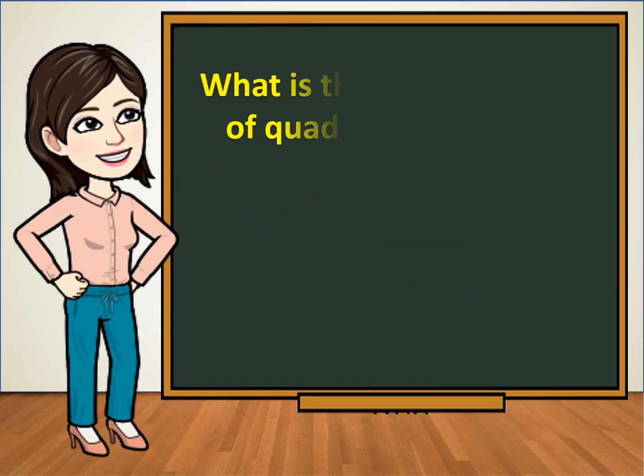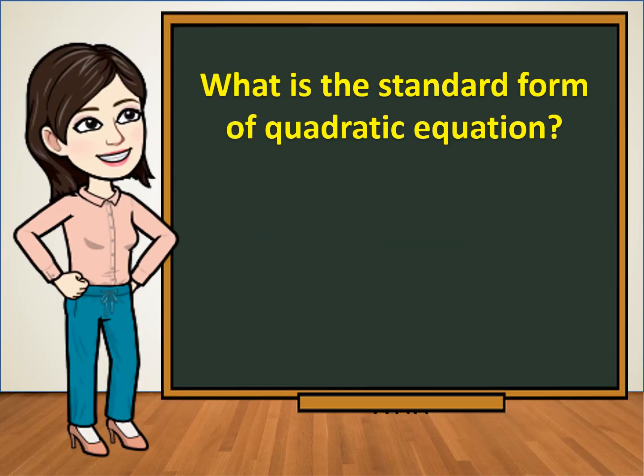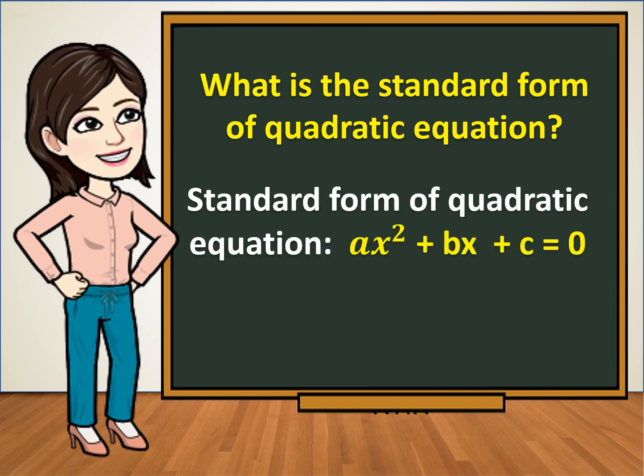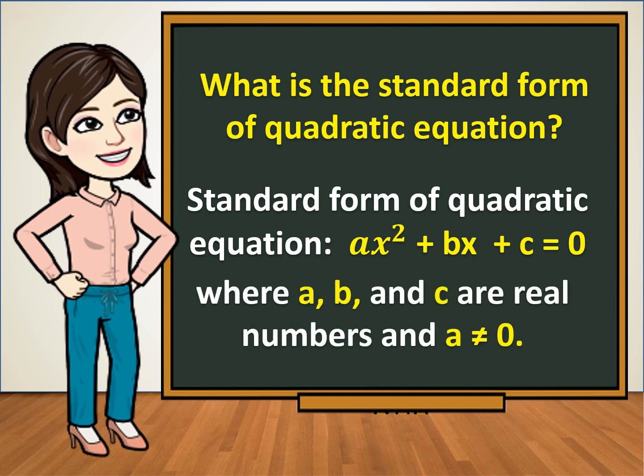What is the standard form of quadratic equation? The standard form of quadratic equation is Ax squared plus Bx plus C is equal to 0, where A, B, and C are real numbers, and A is not equal to 0.